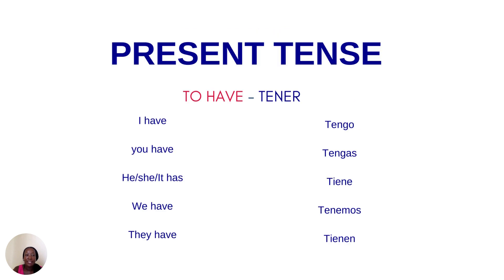So let's have a look at the verb 'to have,' which is another one. So: I have, you have, and then the third person changes to 'has' — he, she, it has. We have, and they have.